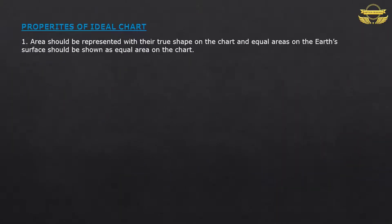Properties of Ideal Chart: 1. Area should be represented with their true shape on the chart and equal areas on the earth surface should be shown as equal area on the chart also. Shape and area must be same as Earth.